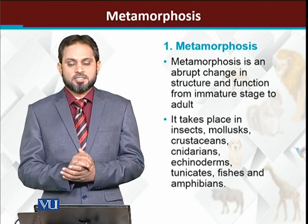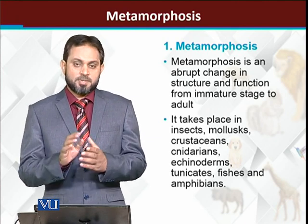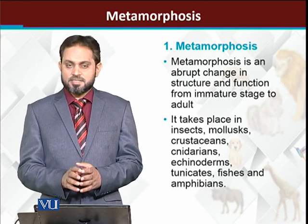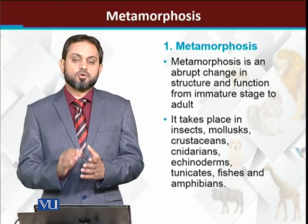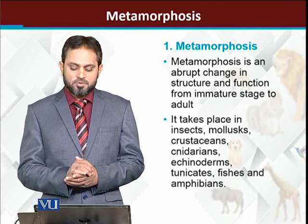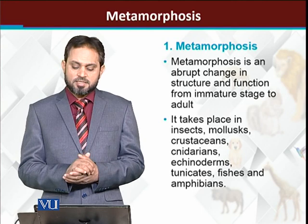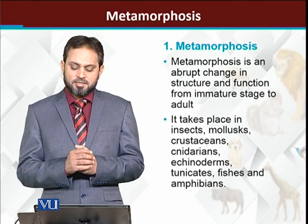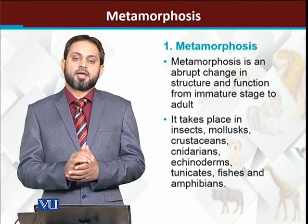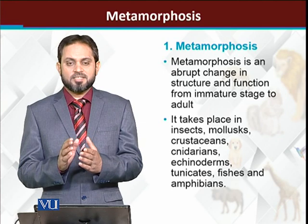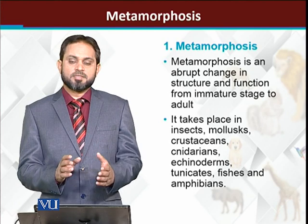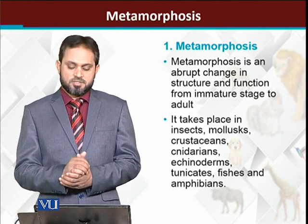Metamorphosis basically occurs in animals — especially invertebrates — which is very common. Most of the insects, 80-90% of insects, undergo metamorphosis. It is also found in molluscs, crustaceans, cnidaria, tunicates, some fishes, and even amphibians. So in vertebrates, some fishes and amphibians have metamorphosis; most invertebrates undergo metamorphosis.